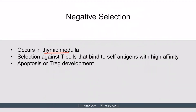Negative selection occurs in the thymic medulla. It's the opposite of positive selection: positive selection selects for T-cells that can bind to MHC, while negative selection selects against T-cells that bind too tightly to self-antigens. Negative selection is important in eliminating T-cells that would recognize our own antigens and mount an immune response against our own cells, thereby helping prevent autoimmune disorders. T-cells that bind too tightly will undergo apoptosis or become T-regulatory cells.